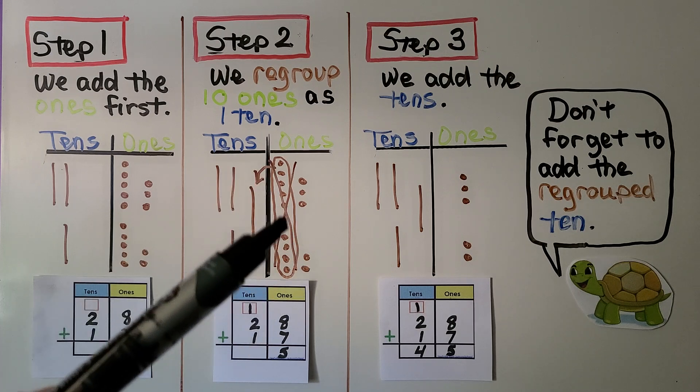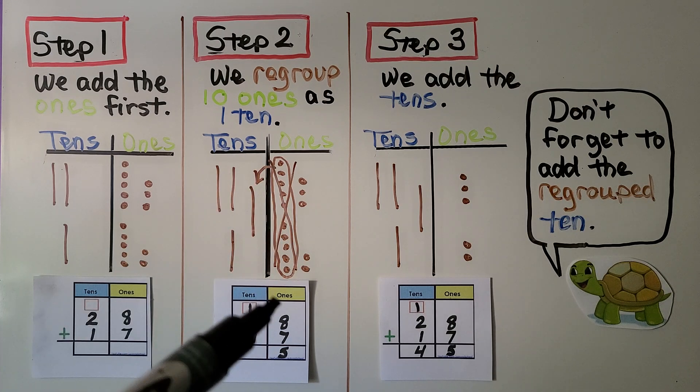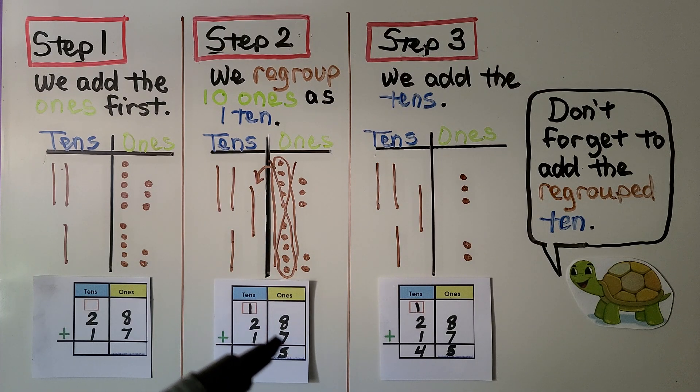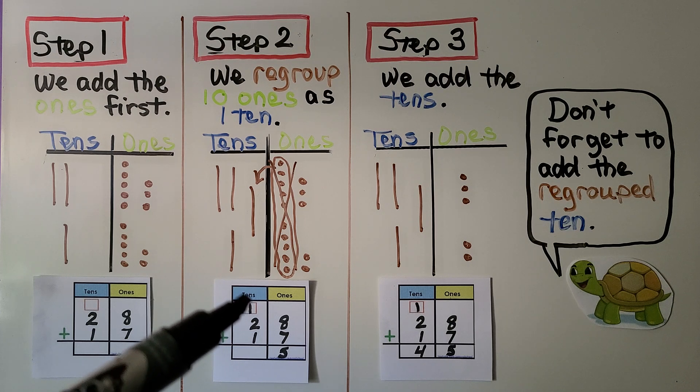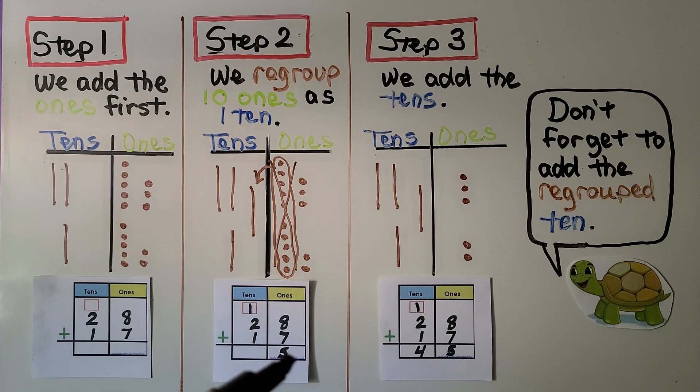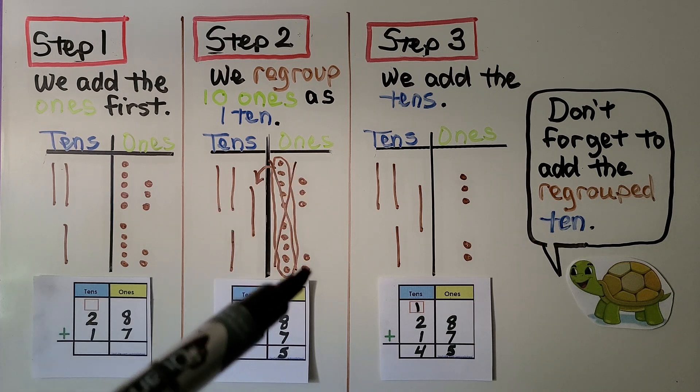We cross them out because we've moved them to the tens place. 8 plus 7 is equal to 15. We regrouped the one ten. We put the five ones into the ones column. See the five ones?